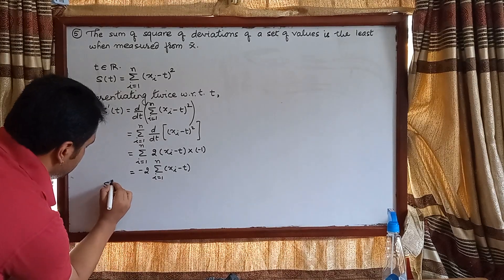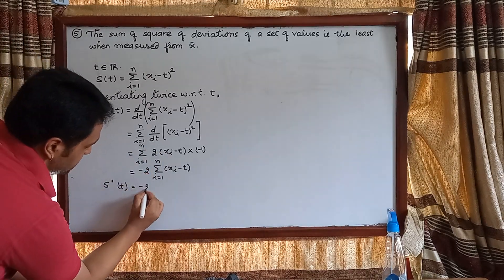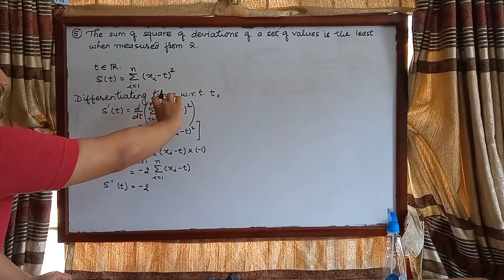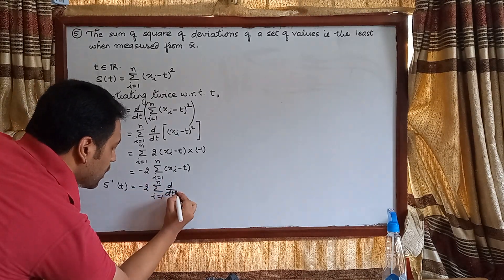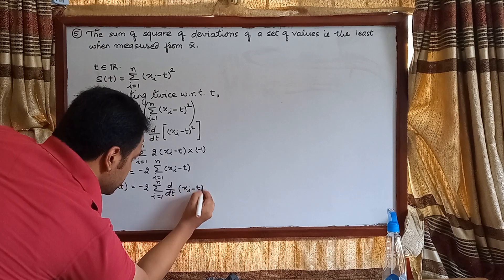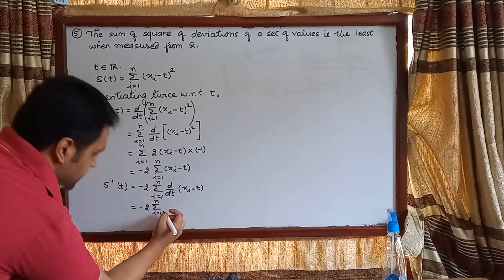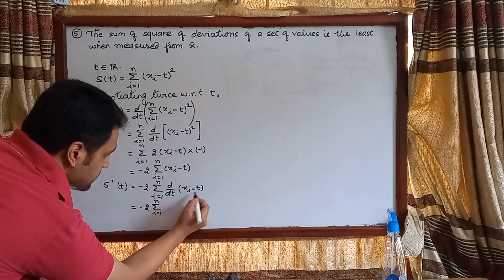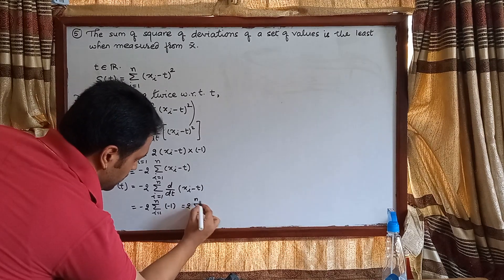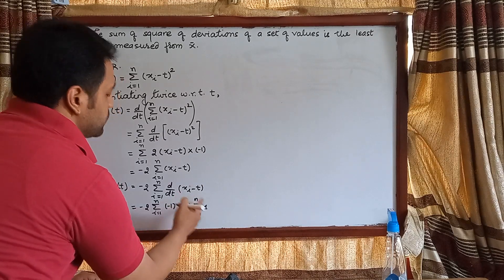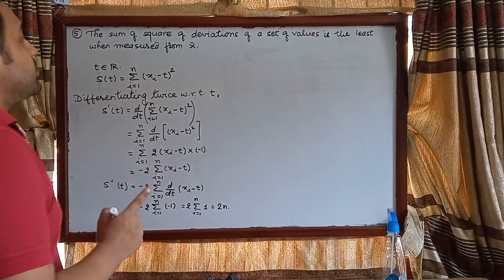For the second derivative, the constant minus 2 remains and we take the differential operator inside the summation. So S″(t) equals minus 2 times the summation from i equals 1 to n of d/dt of (x_i minus t). The derivative of x_i is 0 and the derivative of minus t is minus 1, giving plus 1 each time. The summation of 1 from i equals 1 to n equals n, so S″(t) equals 2n.